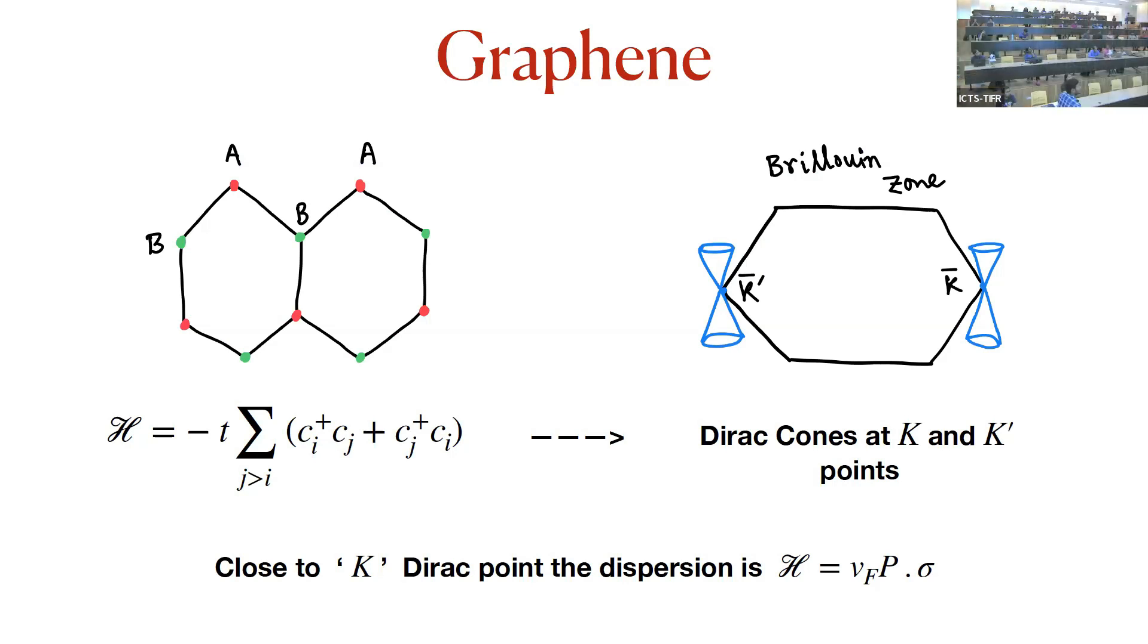Before going to the quantum Hall regime, let me first give you a brief introduction of graphene itself. Graphene is a hexagonal lattice structure of two inequivalent carbon atoms, labeled by A and B sublattice. One can get the electronic properties using a simple nearest neighbor tight-binding Hamiltonian. If you are interested in the bulk properties of graphene, you can do the Fourier transform and go to the Brillouin zone and calculate the band structure.